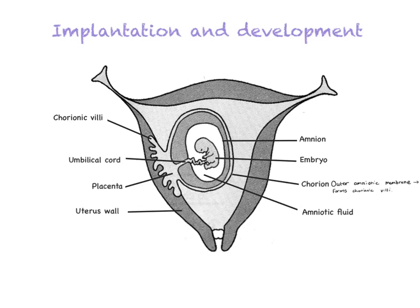Be careful not to say 'chronic villi' — the correct term is chorionic villi. It is the same structure physically as a villus in the small intestine: a finger-like projection that increases surface area. The chorionic villi help to form the placenta. So the placenta is the chorionic villi plus the endometrium — it is part of the baby and part of the mother.